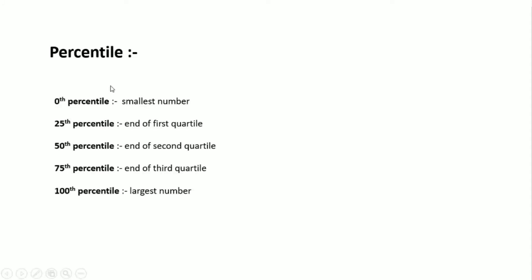Now let's understand percentiles. The 0th percentile is the smallest number, the 25th percentile is the end of the first quartile, the 50th percentile is the end of the second quartile, the 75th percentile is the end of the third quartile, and the 100th percentile is the largest number. A number line can be divided into these segments.